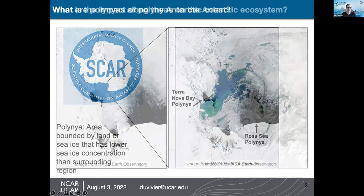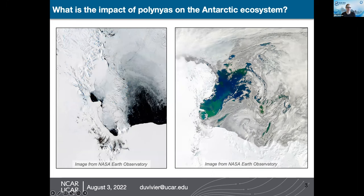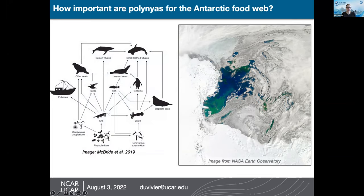The reason we're interested in these areas is that they can have intense biological productivity. You can see a very large phytoplankton bloom in the Ross Sea in an area where polynias had likely occurred that year. It's not just at lower trophic levels — we're also interested in how polynias might affect predators, because these are areas where predators could access pelagic resources.